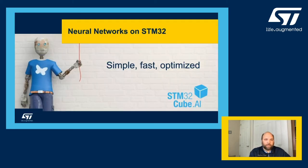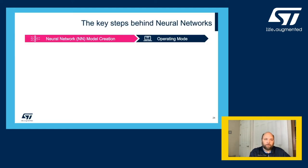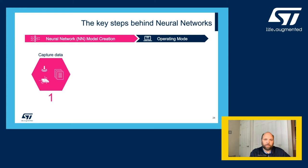Now looking at it more in detail, the big question is how are we getting neural networks to run on the STM32 edge device? The solution is the STM32 Cube AI neural network conversion. There are five key steps behind neural networks. First, we need to capture data — a lot of it. In some cases, hundreds of thousands or even millions of data sets. The more the better, as it improves the accuracy of the model.